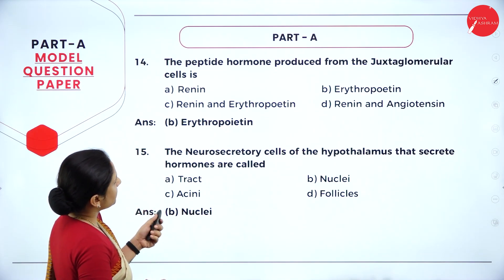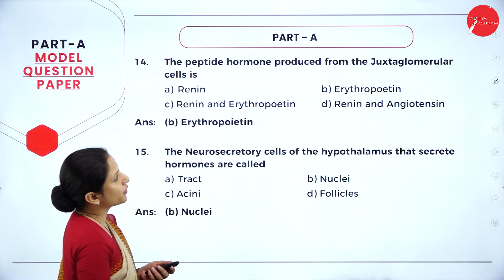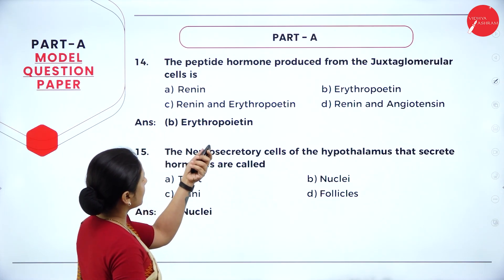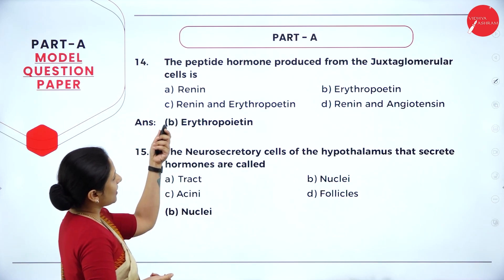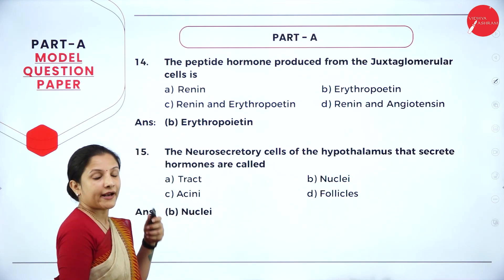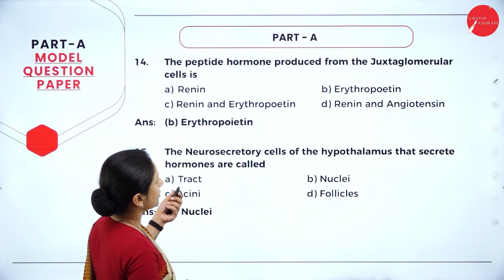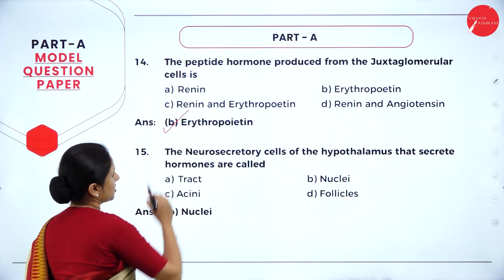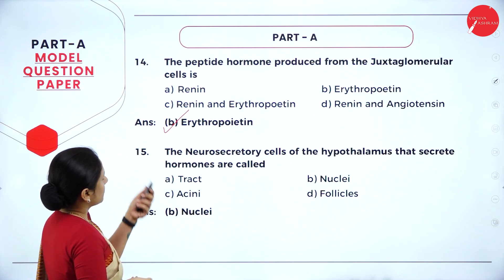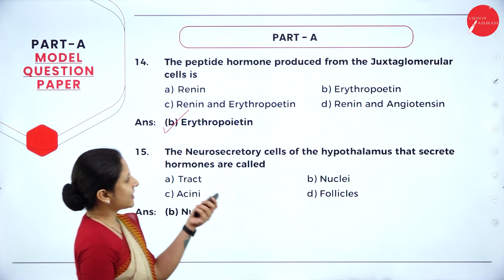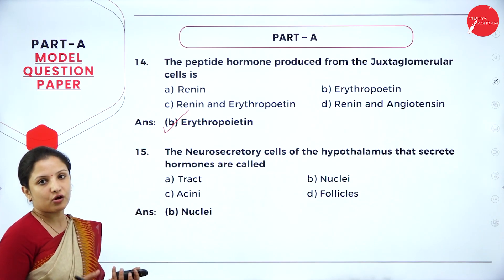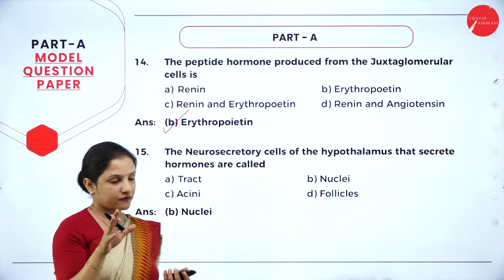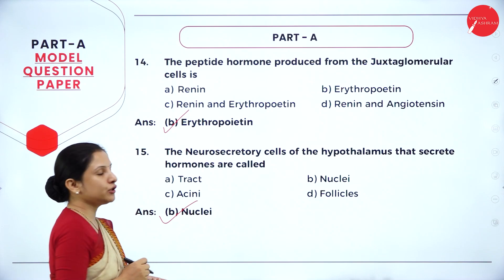Question 14: the peptide hormone produced from the juxtaglomerular apparatus is erythropoietin — renin has nothing to do with the juxtaglomerular apparatus. Question 15: the neurosecretory cells of the hypothalamus that secrete hormones are called nuclei — small oval-shaped cells present in the hypothalamus region. Option B is the right answer.